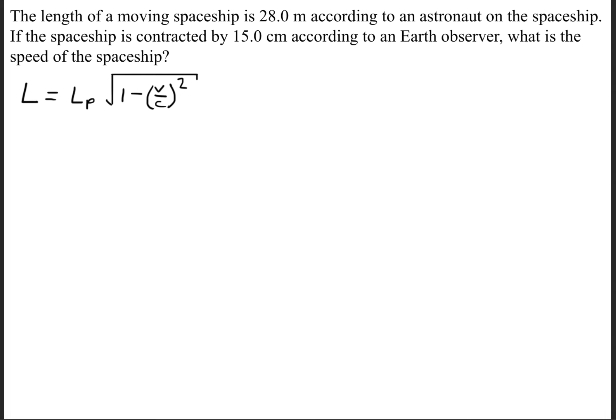We're going to rearrange this formula and solve for the velocity because the question is asking for the speed of the spaceship. To do that, we'll square both sides of the equation so that we get L squared equals the proper length squared times 1 minus V squared over C squared.